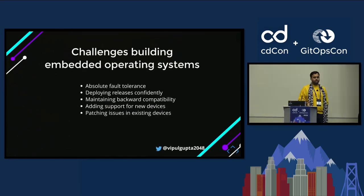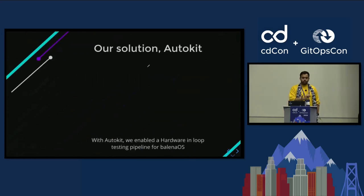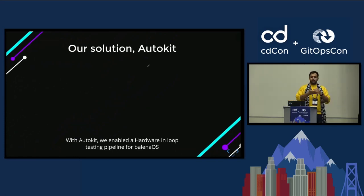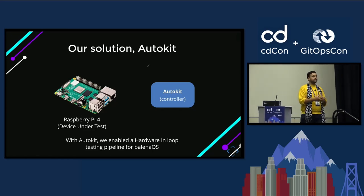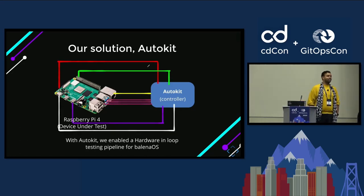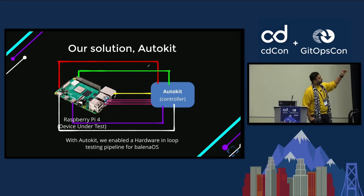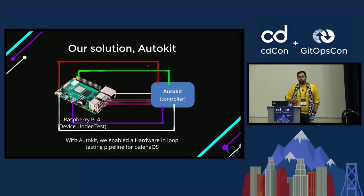There are several challenges involved in building an embedded operating system: maintaining backwards compatibility, adding support for new devices, and all the good things that come with maintaining operating systems — but now you're maintaining operating systems for a hundred different devices. Our solution is an AutoKit. An AutoKit is a device that controls a device under test. If you're building an operating system for a Raspberry Pi 4, an AutoKit controls the Raspberry Pi 4 to test on it.